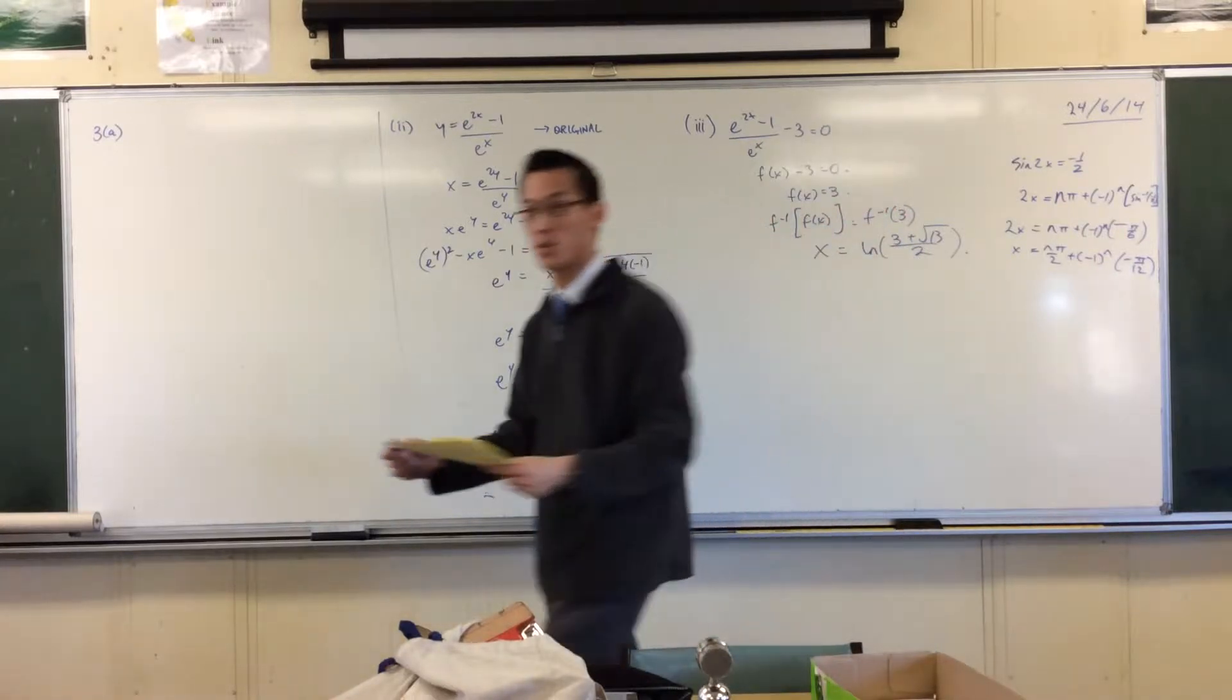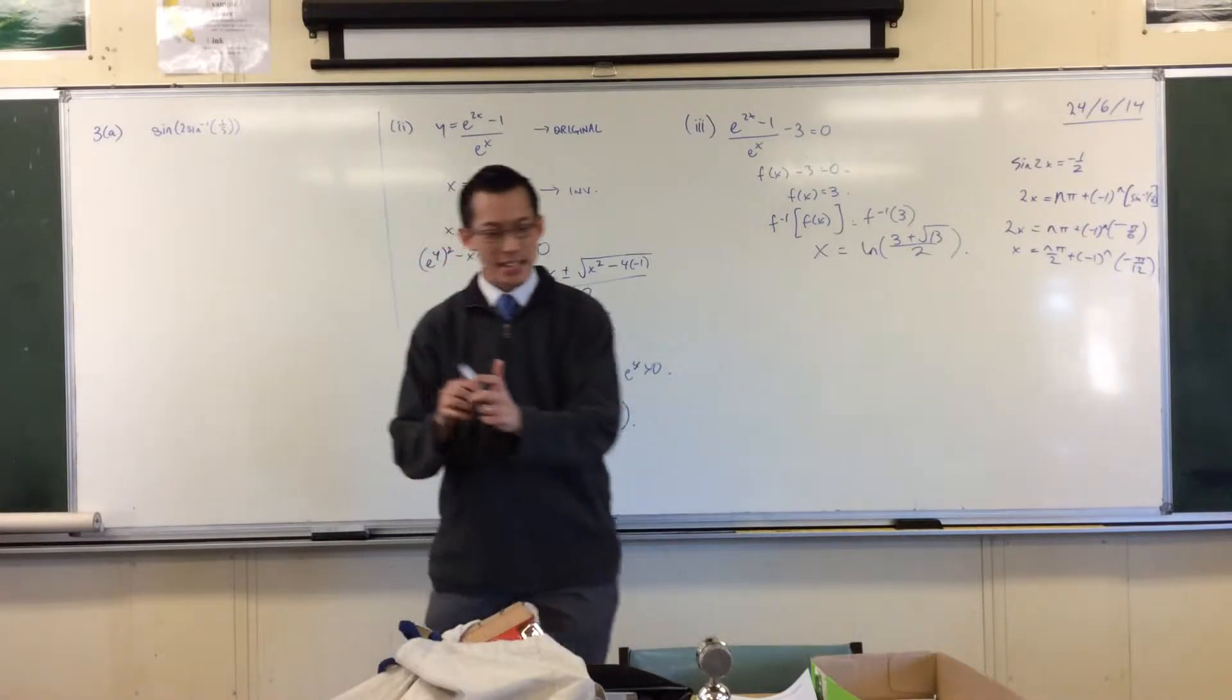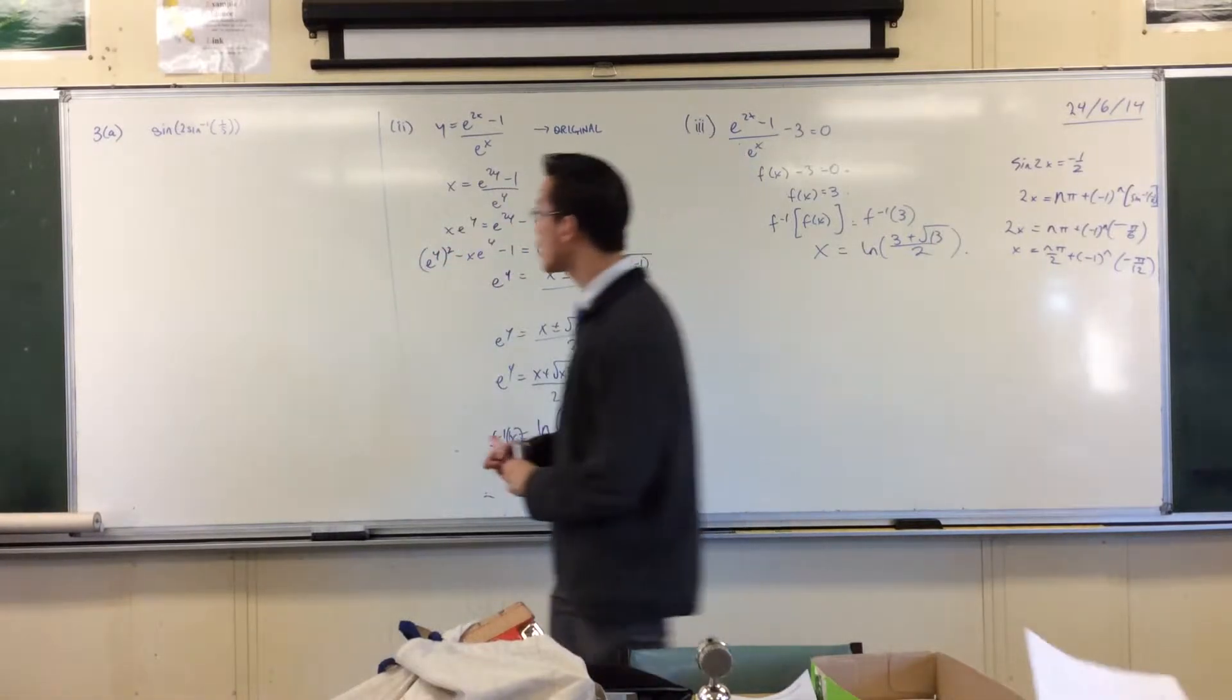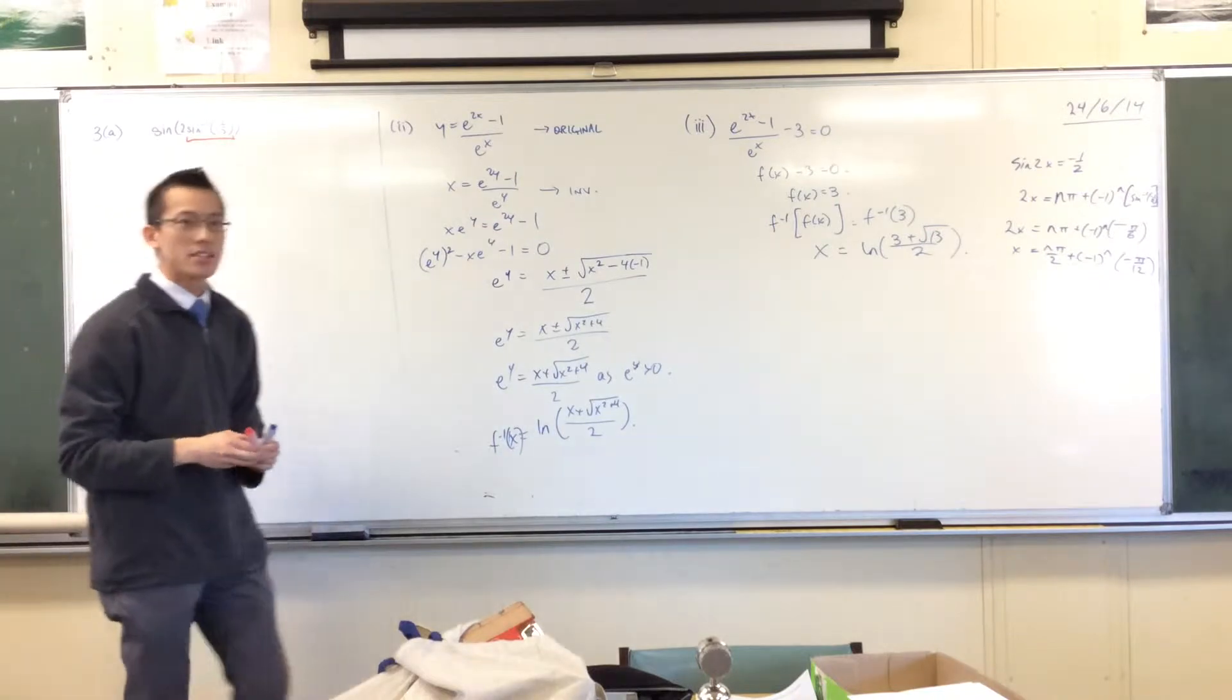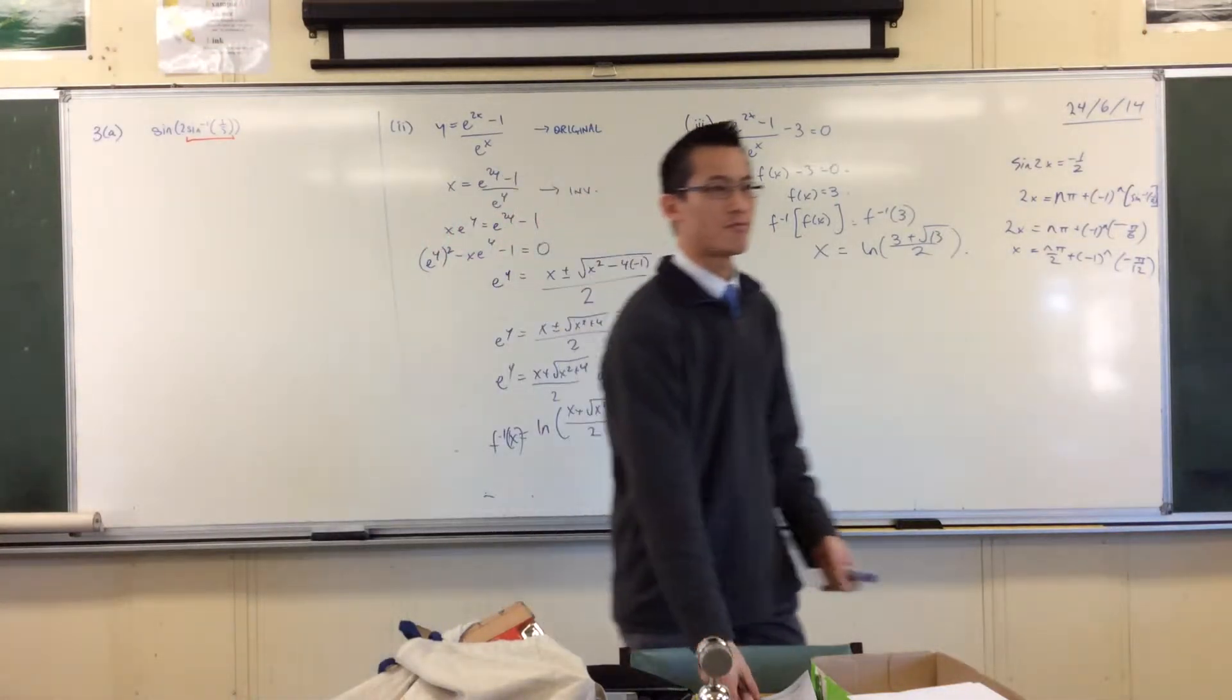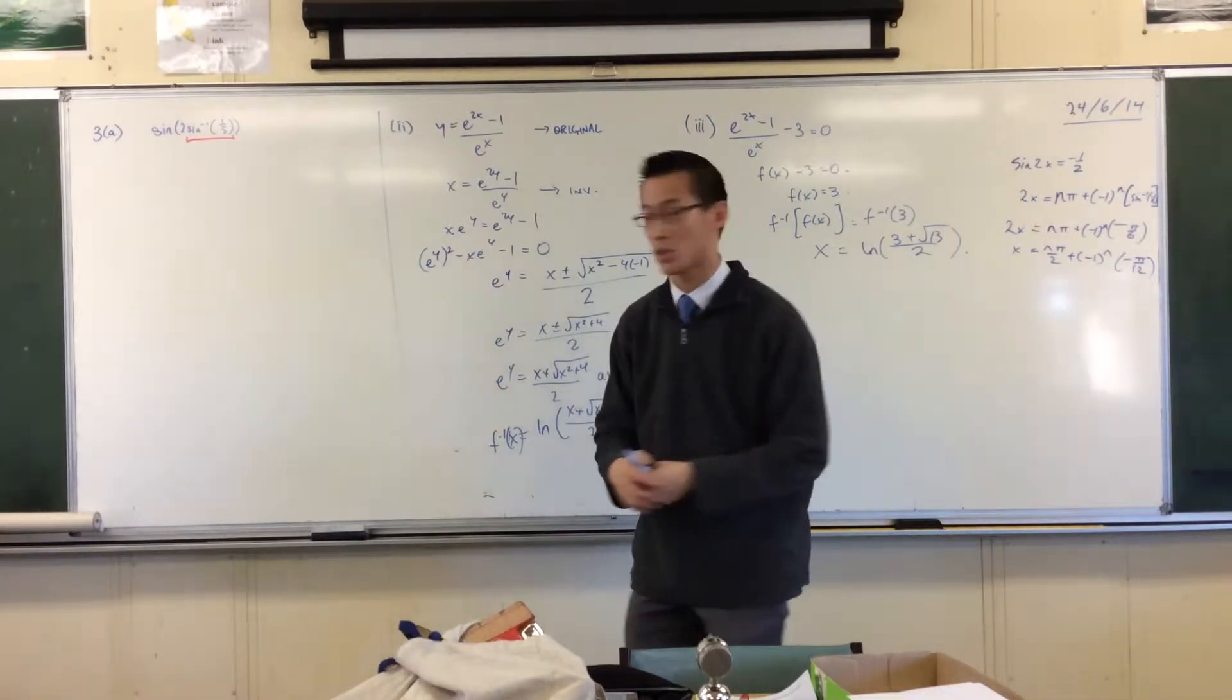It says find the exact value and then they give you this mess. So this is what we need to do. The easiest way to approach it is to think of this guy in here, to think of him as an angle. I know it's really just a number, but if we think of him as an angle, that's useful to us.